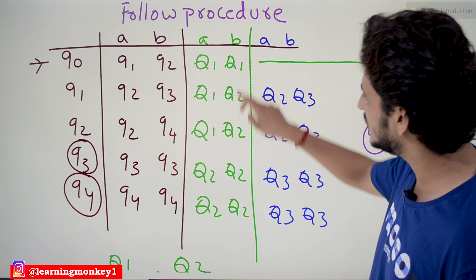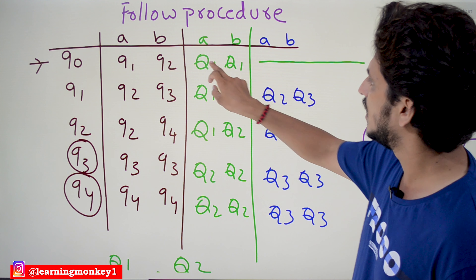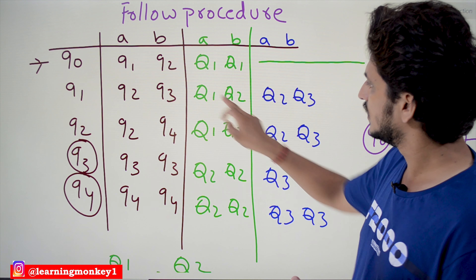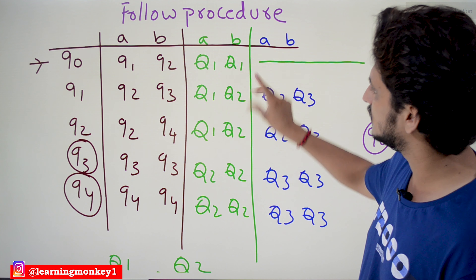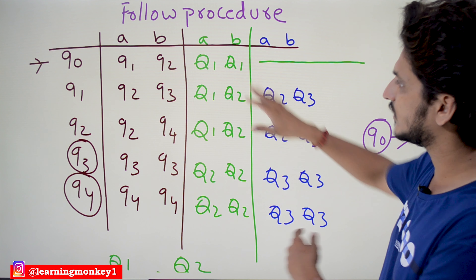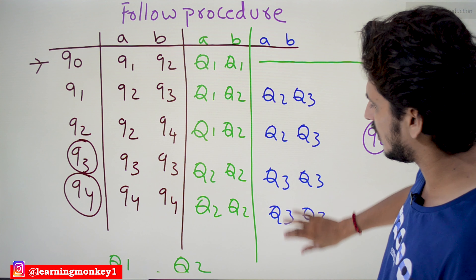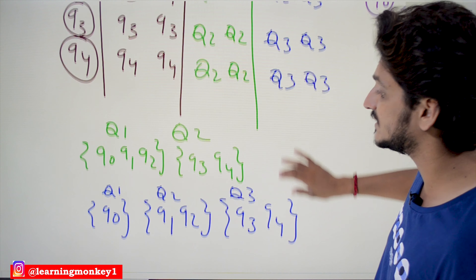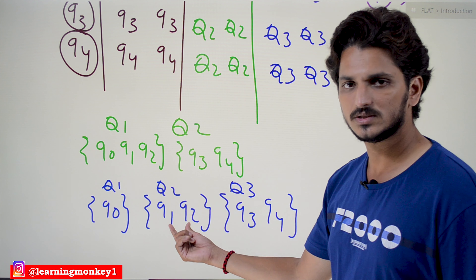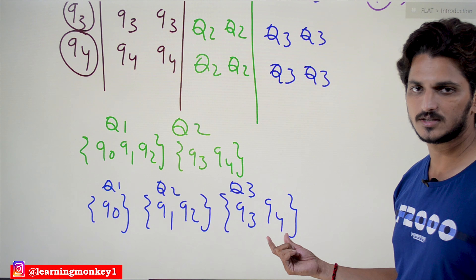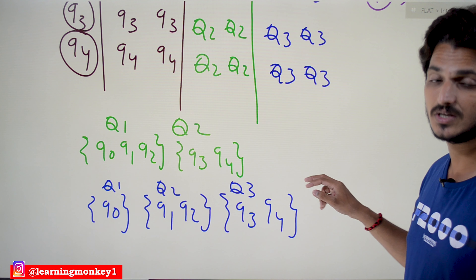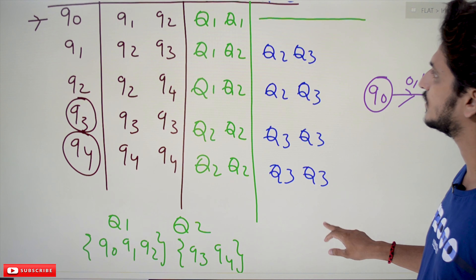Now compare Set Q1 containing Q0, Q1, Q2. Q0 maps to Q1, Q1; Q1 maps to Q1, Q2; Q2 maps to Q1, Q2. Q1 and Q2 are similar to each other, but Q0 is different. So we divide: Q0 goes into a new set (Set Q3), and Q1, Q2 stay together. After this first division step, we now have three sets: {Q0}, {Q1, Q2}, and {Q3, Q4}.